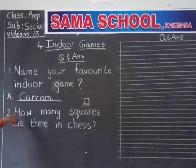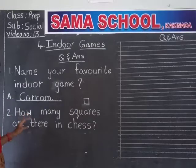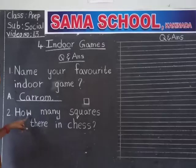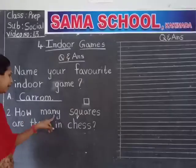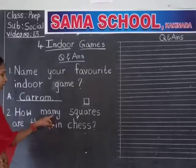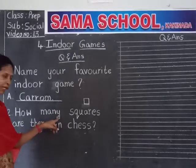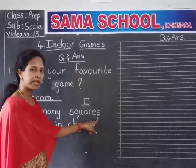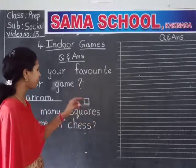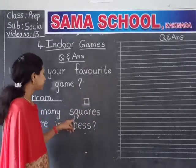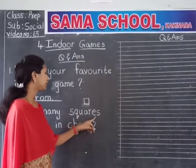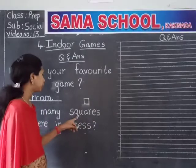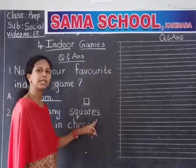These are all new spellings to you, so listen carefully. How — H-O-W. Many — M-A-N-Y. Squares — S-Q-U-A-R-E-S. Squares means small boxes in the chess game. A-R-E T-H-E-R-E I-N C-H-E-S-S.